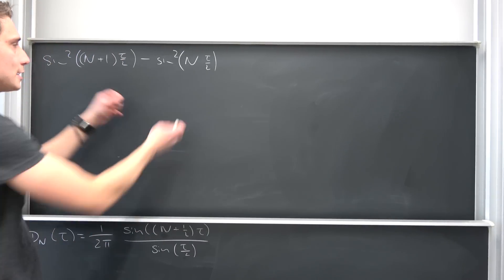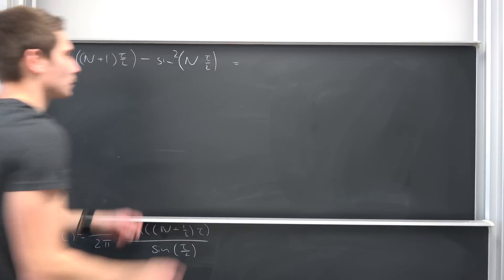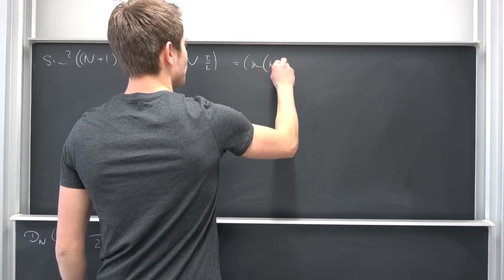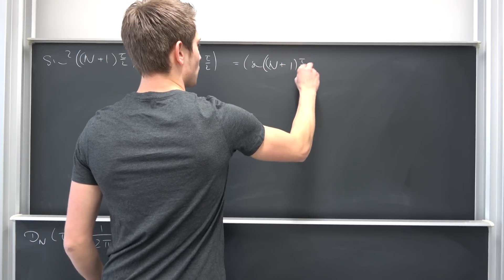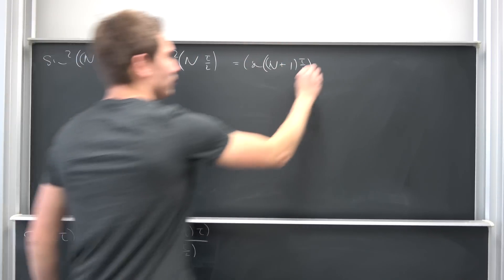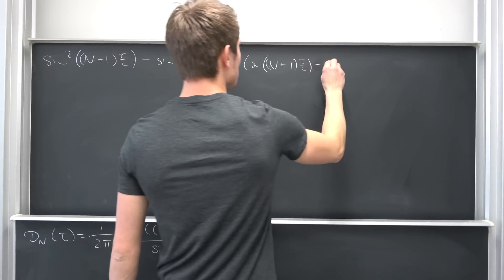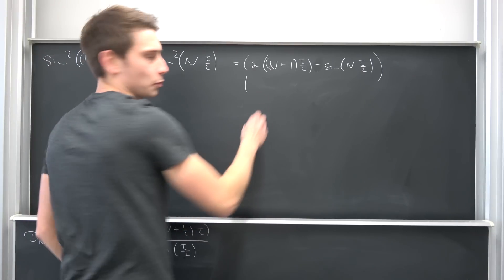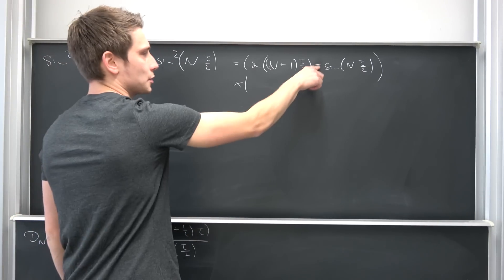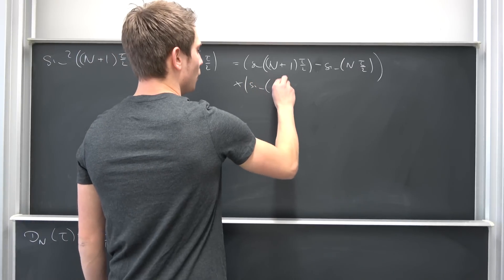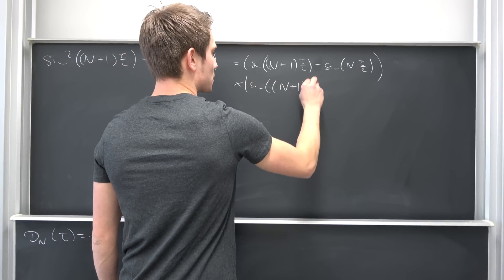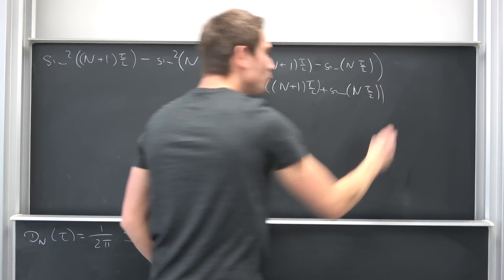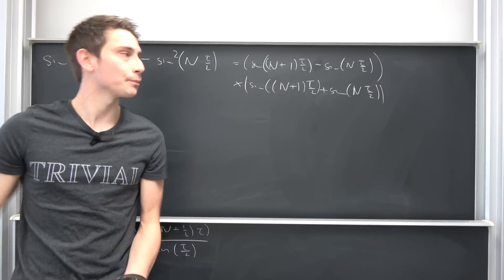At first you might notice that this right here is nothing but the difference of two squares. So we can take the positive times the negative part of this thing. So at first we have the sine of (n+1) times tau over 2, negative sine of n times tau over 2. That's the negative part times the positive branch, so sine of (n+1) times tau over 2, positive sine of n times tau over 2. First part done.